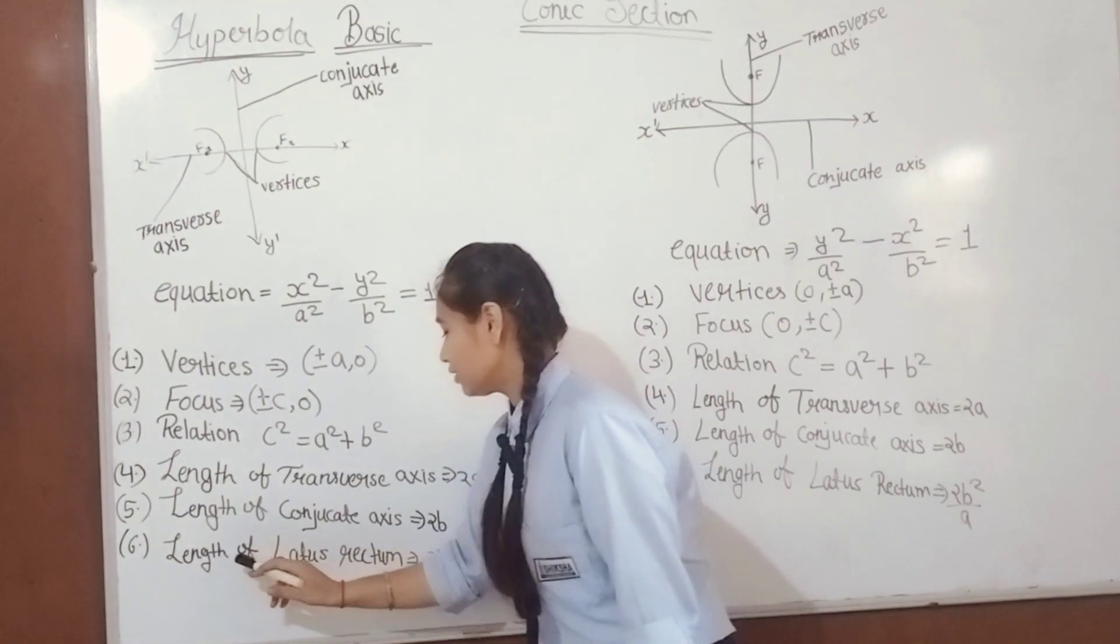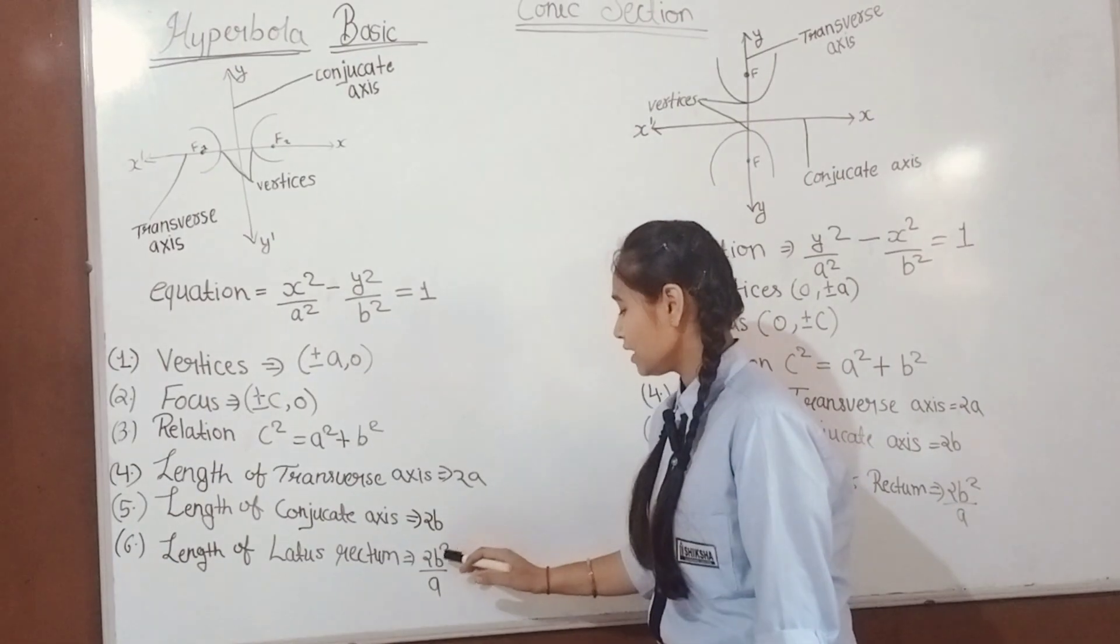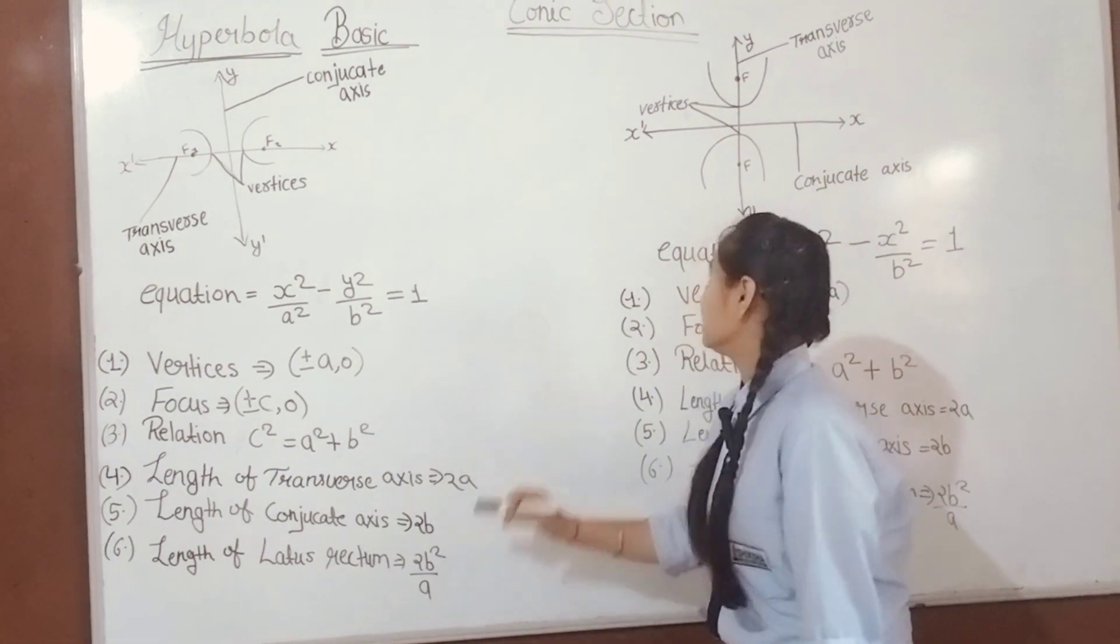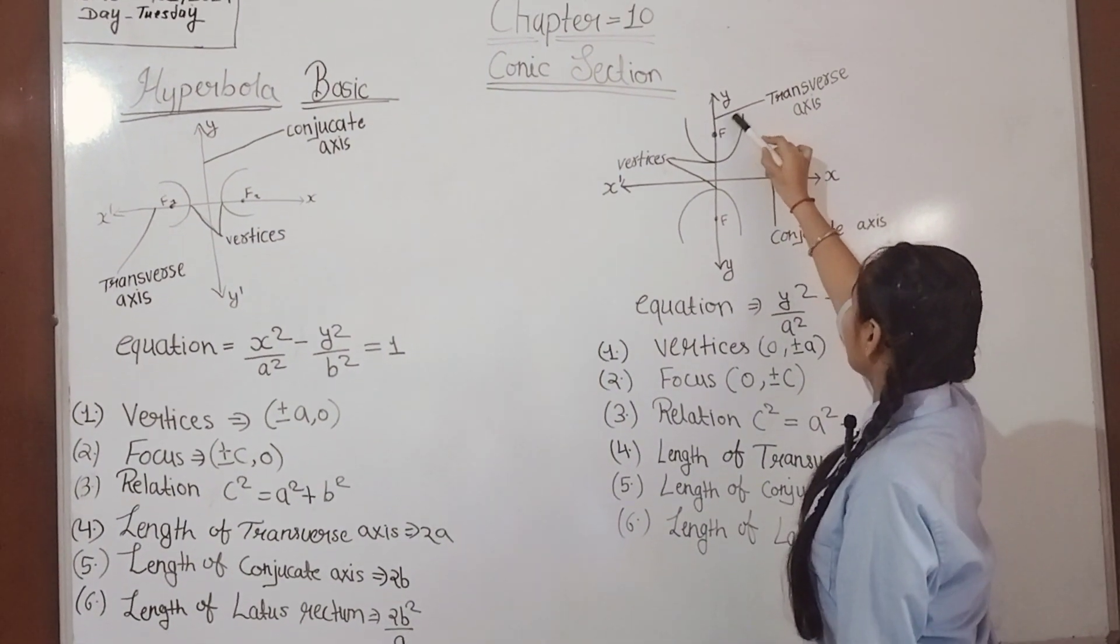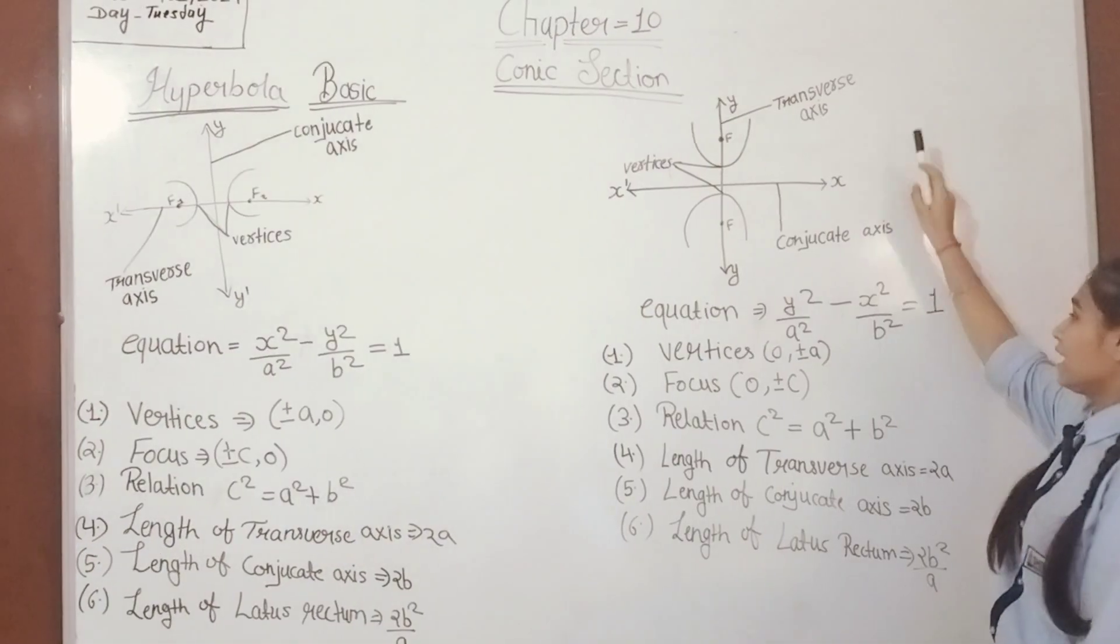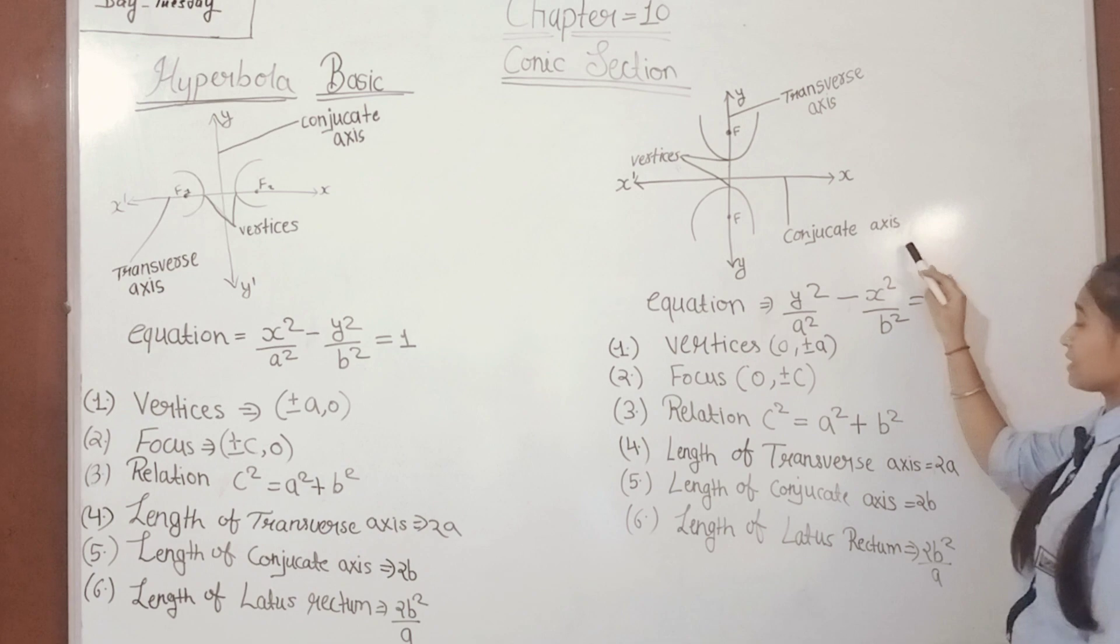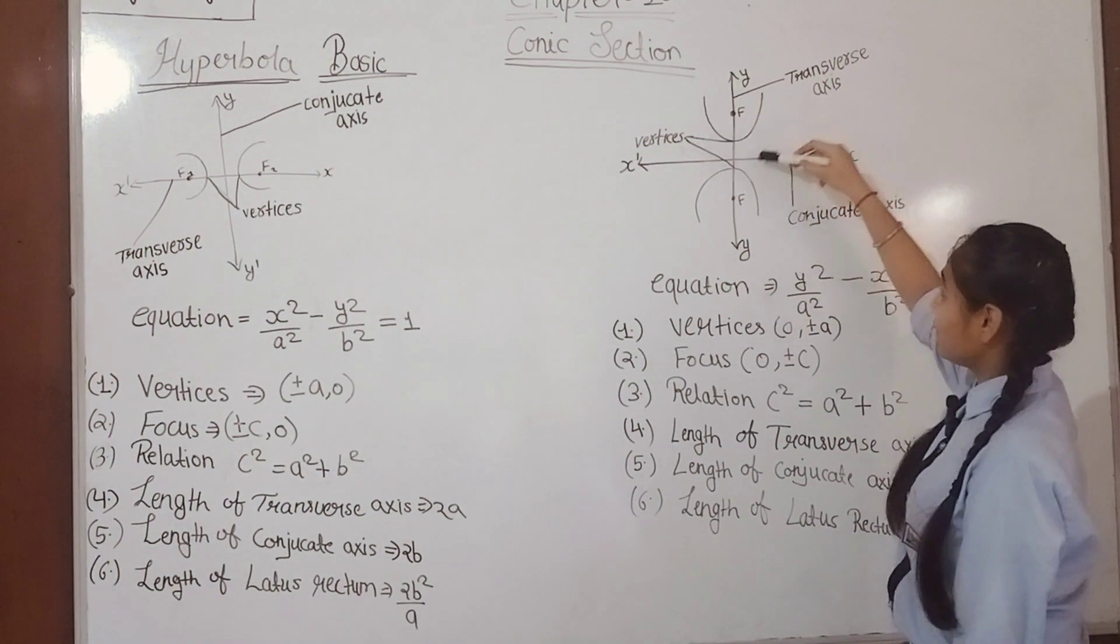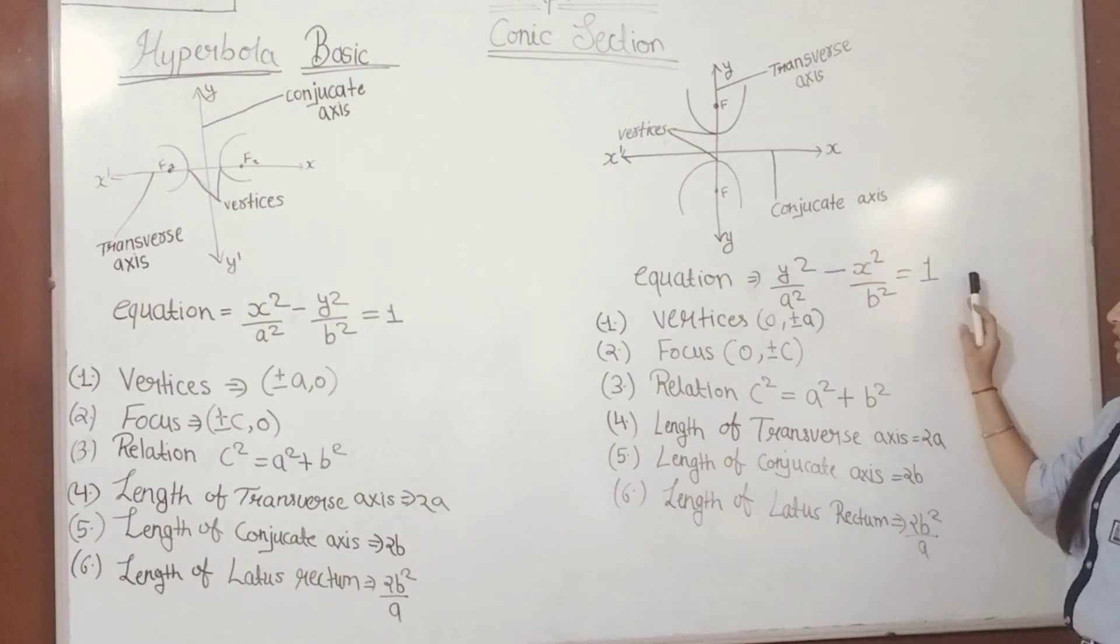If the hyperbola is on the y-axis, the y-axis is called the transverse axis. The other axis is called the conjugate axis. If the hyperbola is drawn on the y-axis, we will apply this equation: